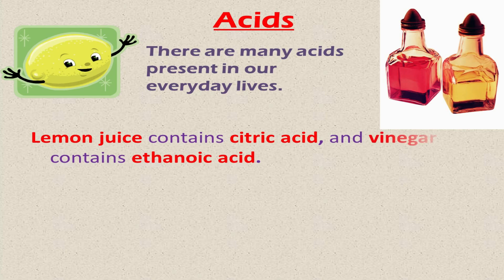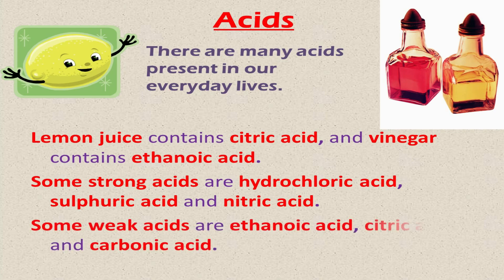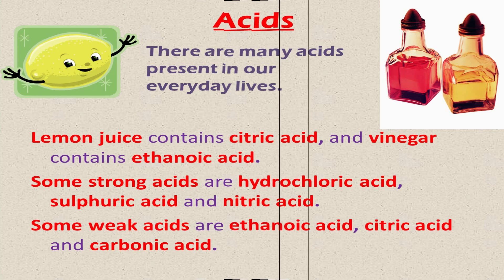In our daily life, around us, there are many substances which are considered as acids. For example, lemon juice contains citric acid and vinegar contains ethanoic acid, which is also called acetic acid. Examples of some strong acids are hydrochloric acid, sulfuric acid, and nitric acid. Examples of some weak acids are ethanoic acid, citric acid, and carbonic acid.